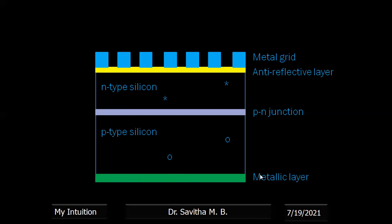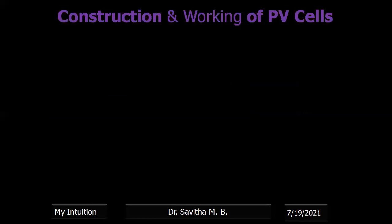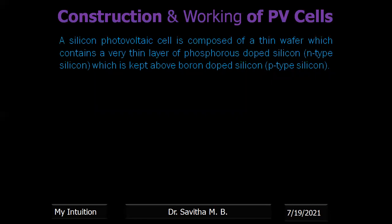These metallic layers are the current collectors and are connected externally through an application. When sunlight flows, the electrons are collected by the upper n-type current collectors, and the holes are collected by the p-type current collectors. The current passes through and we get electricity that can be used in applications.